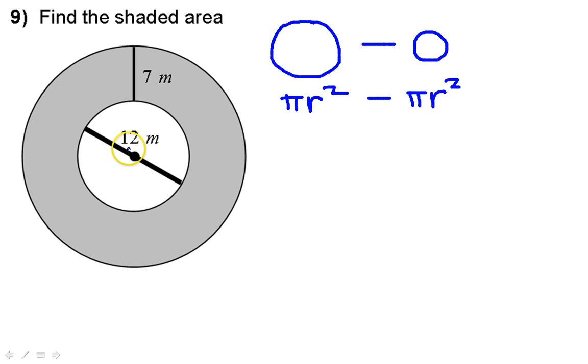We've got to be careful, because I've got this 12, I've got this 7, but neither one of those are the radius of the big circle.